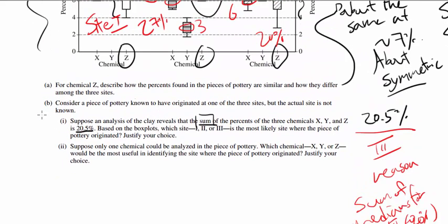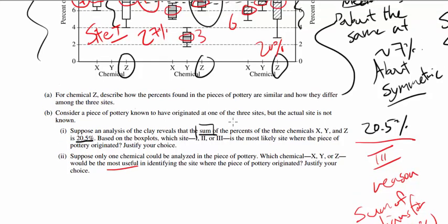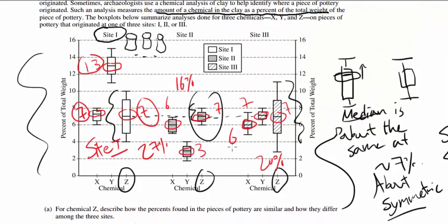Now let's look at part 2 of part B. Suppose only one chemical could be analyzed in the piece of pottery, which chemical would be most useful in identifying where the piece of pottery is from? Justify your choice.